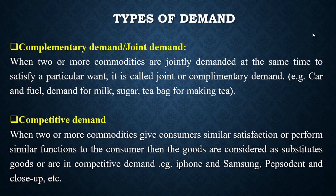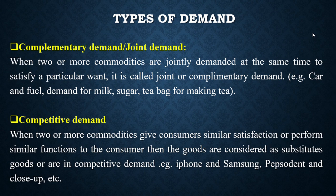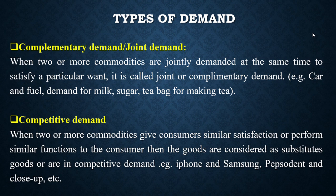We have competitive demand — when two or more commodities give consumers similar satisfaction or perform similar functions, the goods are considered substitutes or are in competitive demand. An example is iPhone and Samsung, Pepsodent and Close-Up toothpaste — they offer almost the same satisfaction to the consumer.